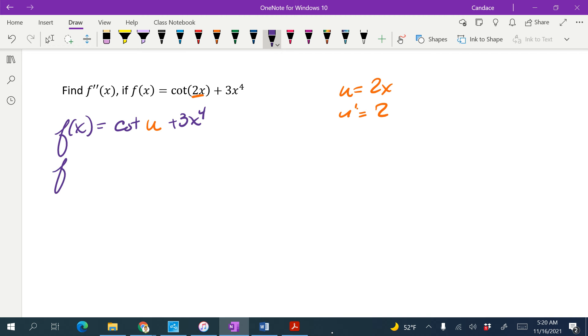So now taking my derivative, f prime of x equals, so my derivative of my outside function, cotangent of u, is negative cosecant squared of u. And then we have to multiply by the inside function, which is 2. And then the derivative of 3x to the 4th would be 12x cubed.